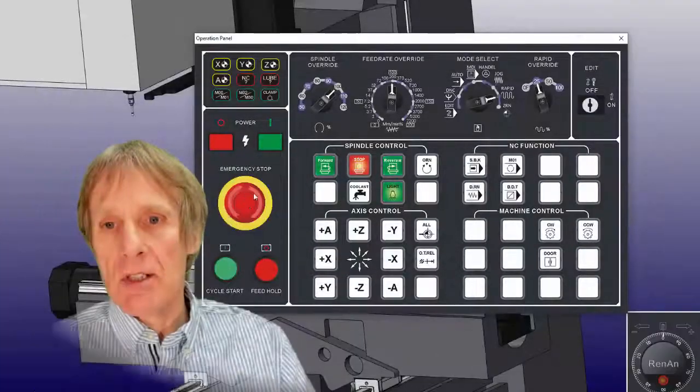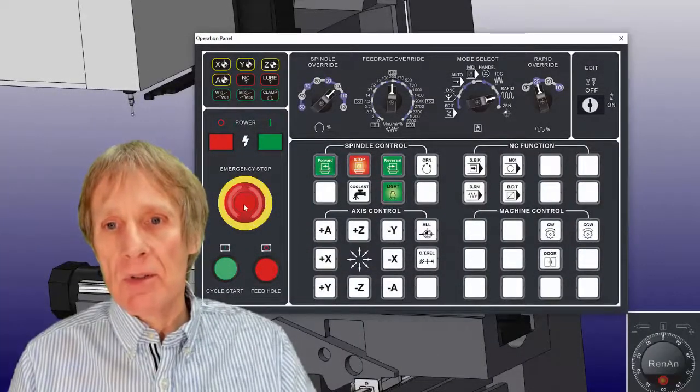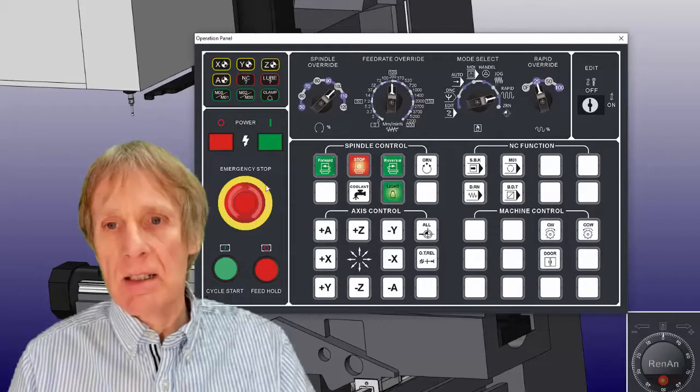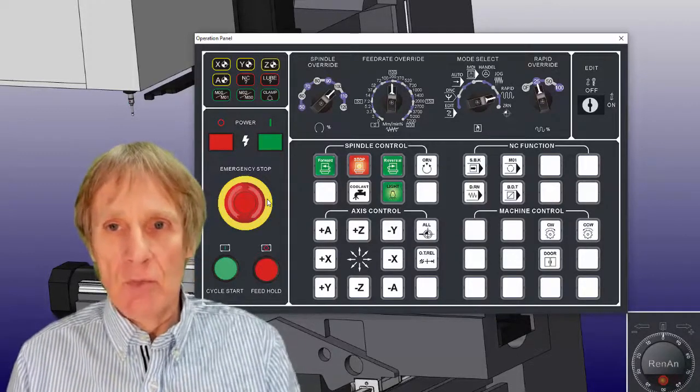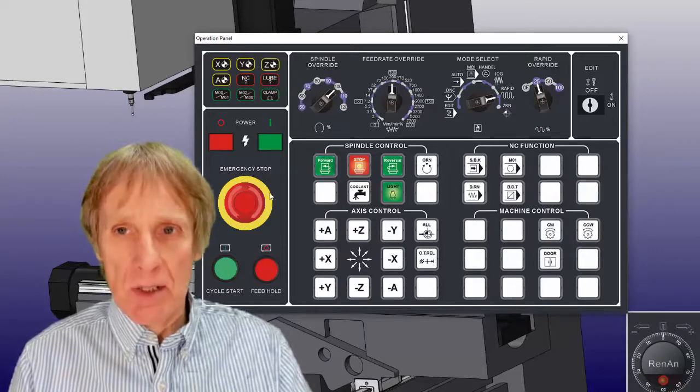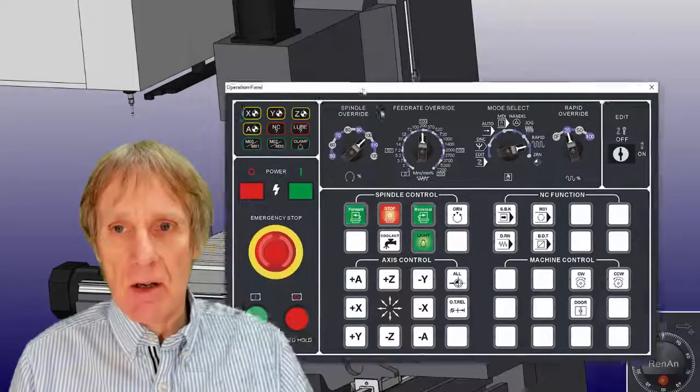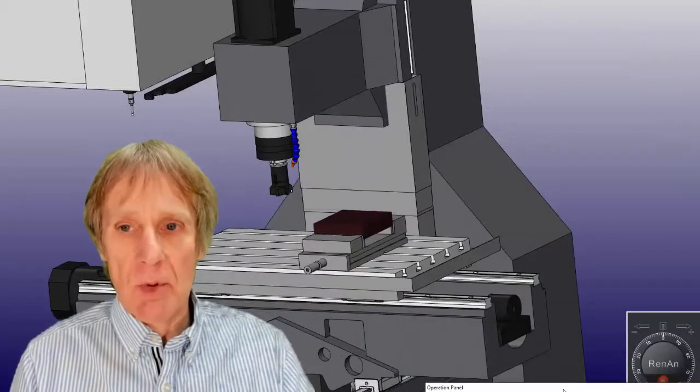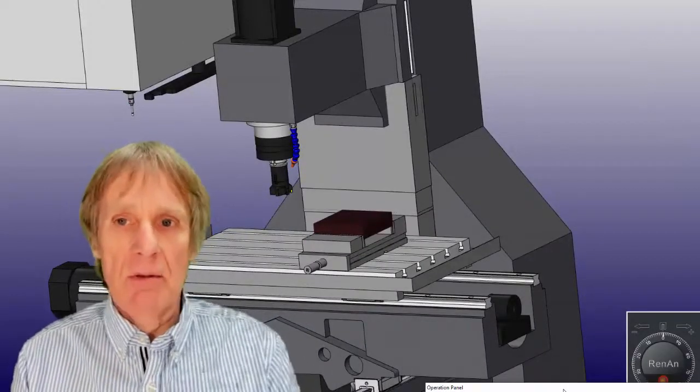When we come to turn the machine back on, the first thing we do is clear the emergency stop. You'd have to rotate that emergency stop button, and that releases it. Then you would hit the reset button. Now what we have to do when we first turn a machine on is pass it over what we call a reference point, and we call this zero return.